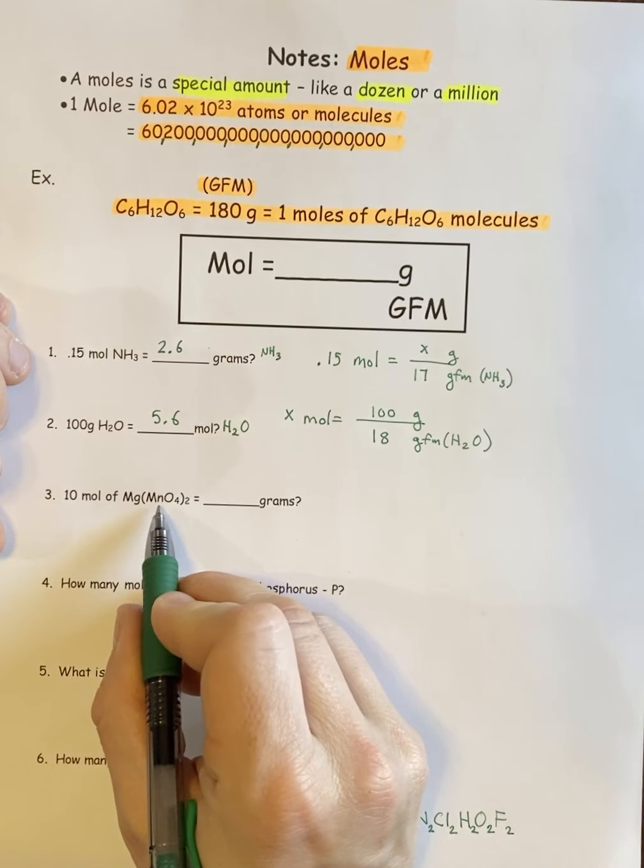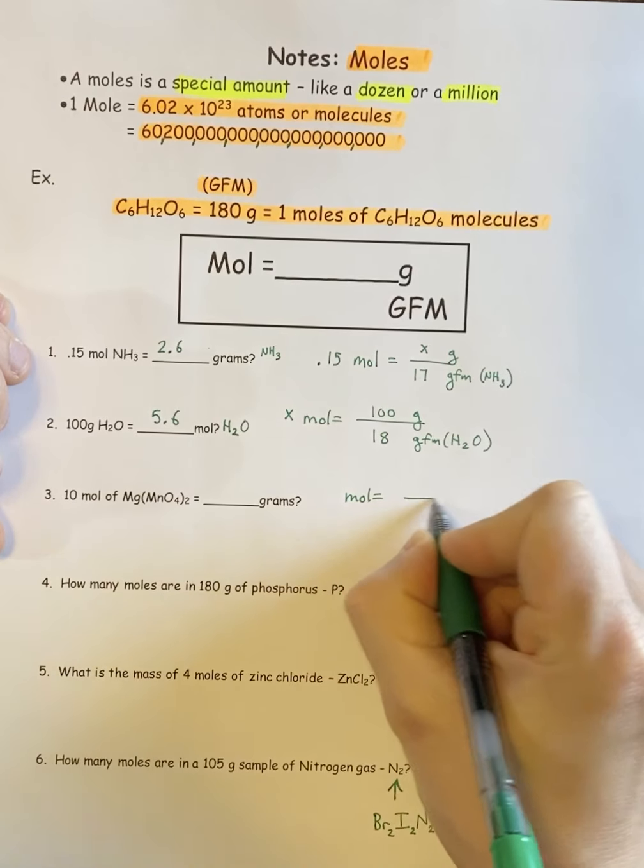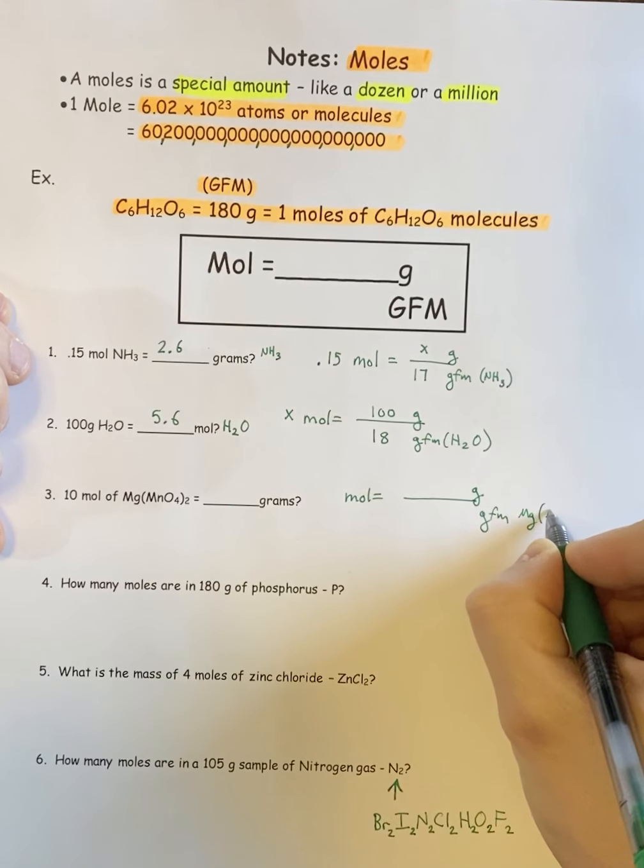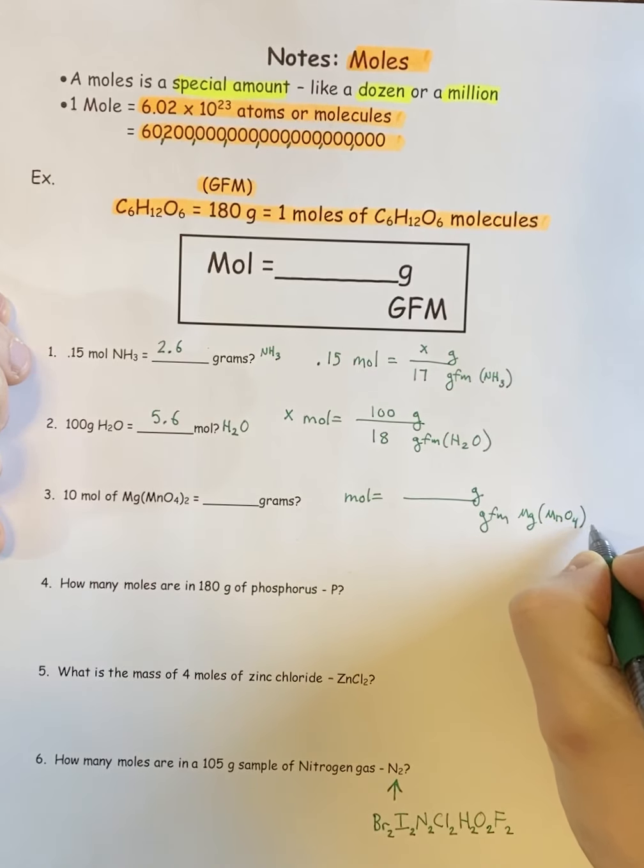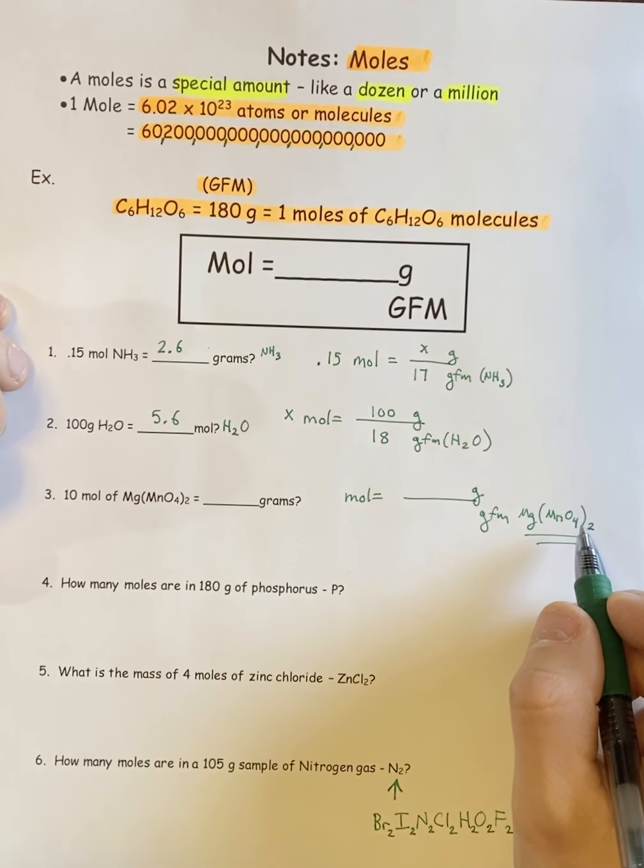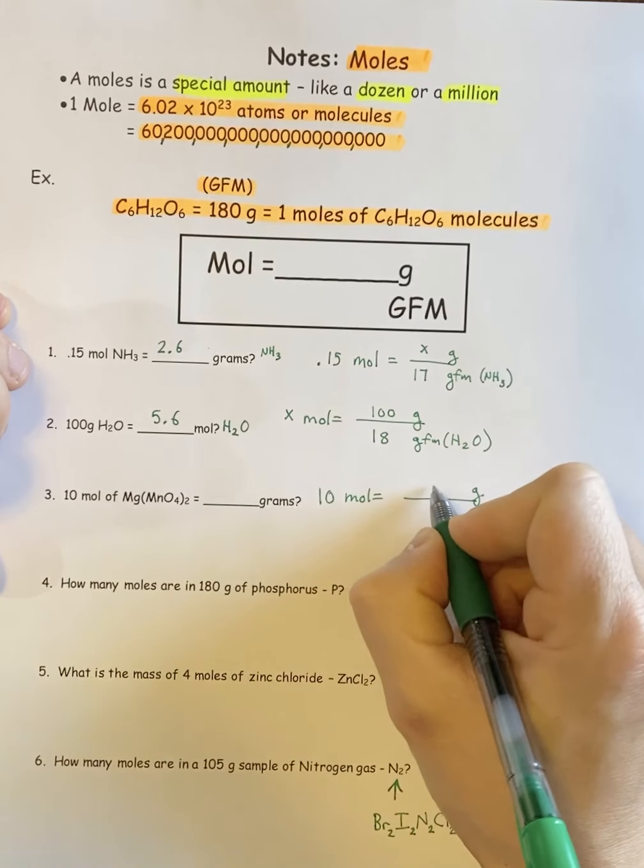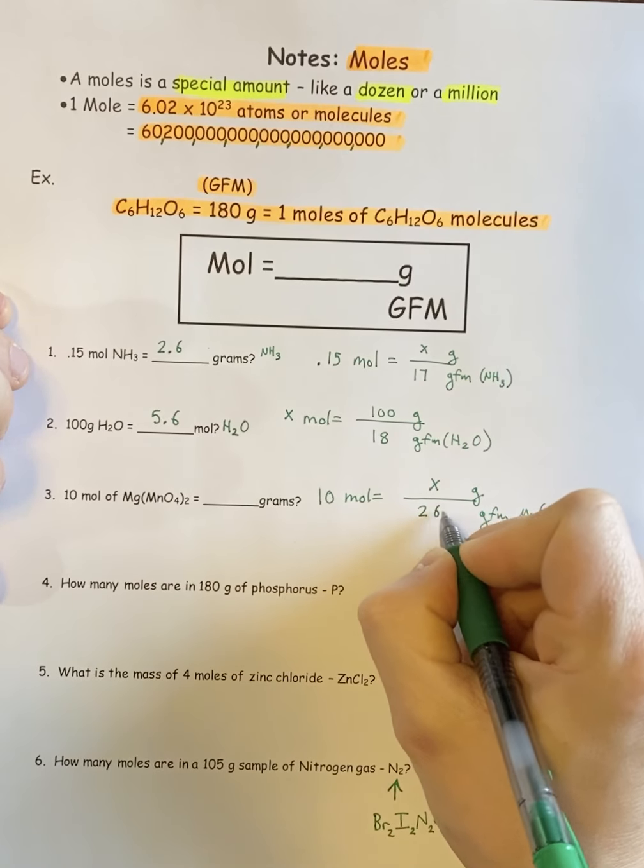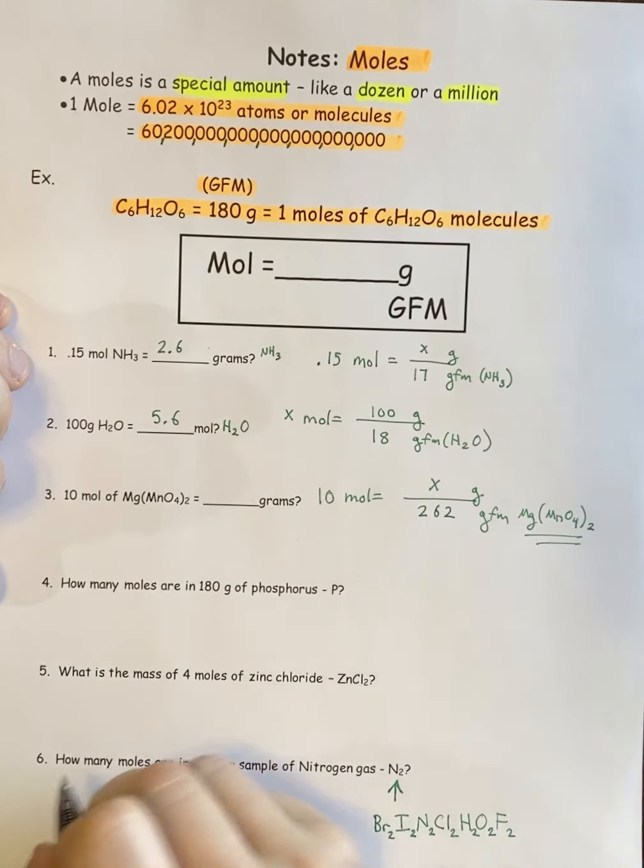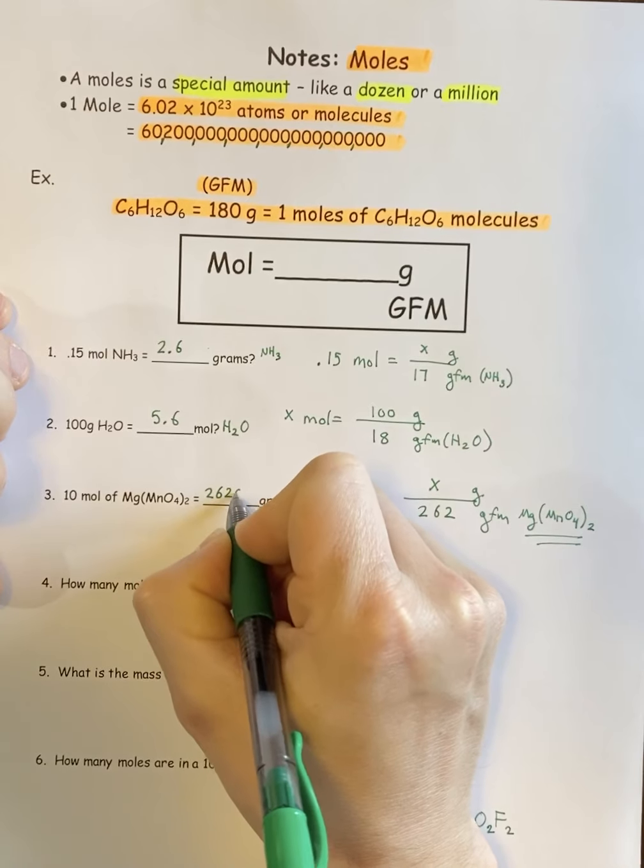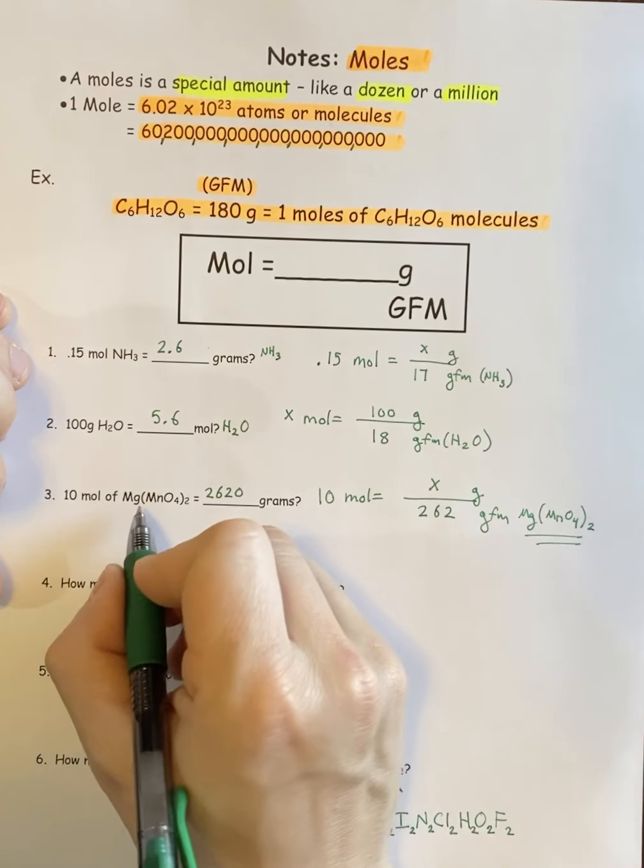Next one, 10 moles of Mg(MnO3)2, how many grams would it be? The only problem or the most difficult part here is just figuring out the GFM because it tends to be a little larger and it has parentheses in it, but you should be able to do that. They give me 10 moles, they want grams. When I calculate my GFM, I end up getting 262, cross multiply to solve, and you get 2,620 grams.